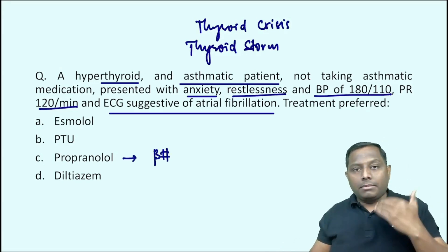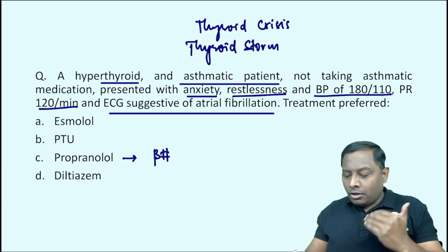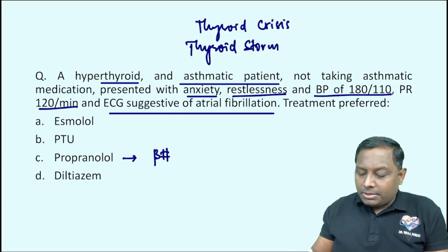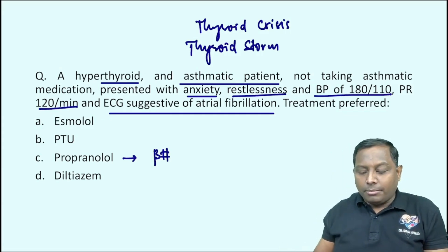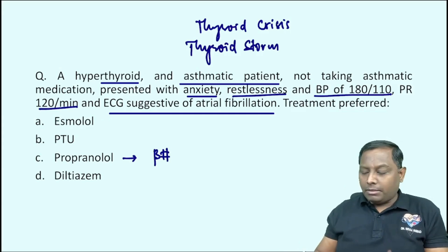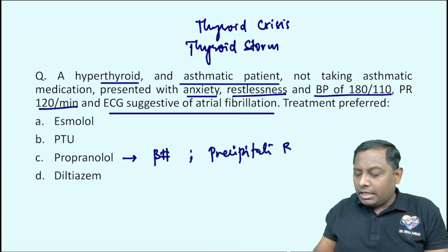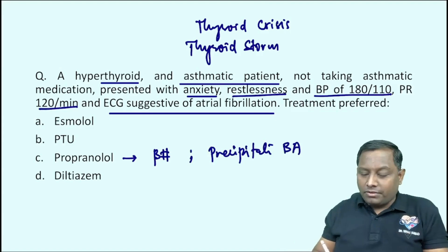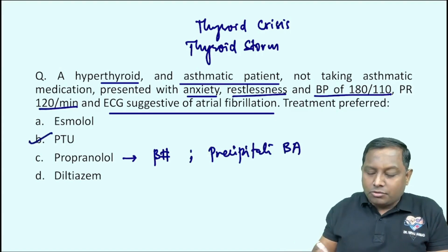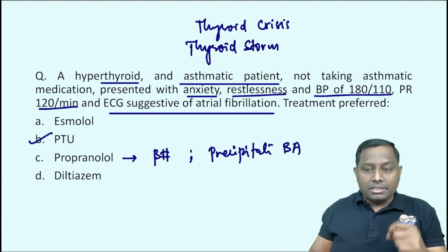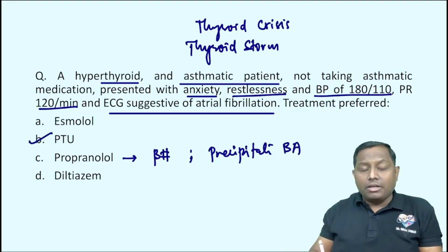Propranolol cannot be used because it is a non-selective beta blocker. It would give relief for atrial fibrillation, blood pressure, and heart rate, but the problem is it can always precipitate bronchial asthma. So propranolol is out of the picture. The next best choice for this patient is PTU.